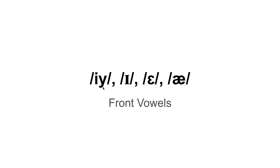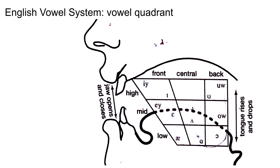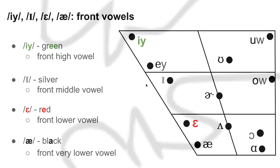We'll be presenting on I, I, E, and A. These are front vowels. When I talk about the vowels, I'm going to be using the vowel quadrant to present the location of the tongue when pronouncing the vowels. So let's get started.